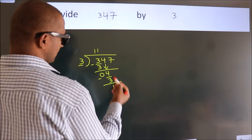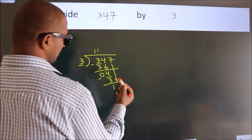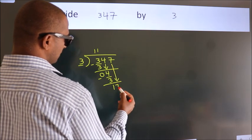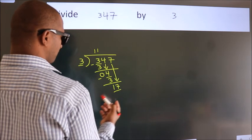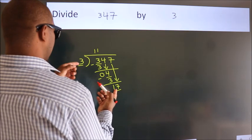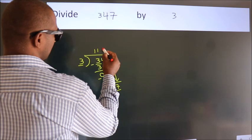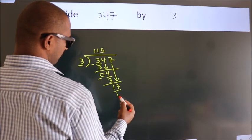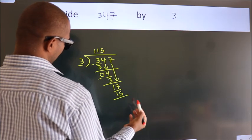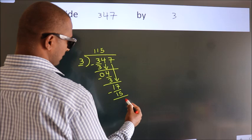After this, bring down the beside number. 7 down, so 17. A number close to 17 in the 3 table is 3 fives 15. Now we subtract. We get 2.